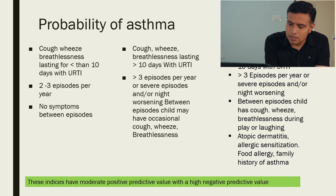These indices have moderate positive predictive value but very high negative predictive value. This means: if a child has no risk factors, the probability of not having the disease is very high. However, even if all risk factors are present, your absolute diagnostic certainty remains only moderate — not definitive.